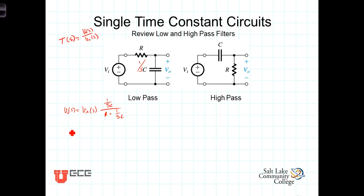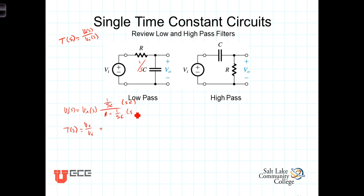We then form the transfer function T of s by dividing both sides of the equation by V_in, so we have V_out over V_in. Multiplying numerator and denominator by the product s times C, we get the transfer function equal to 1 over 1 plus s times RC.